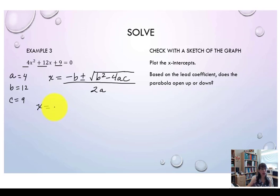Making our substitutions for a, b, and c, x would equal the opposite of b. This time b is a positive 12.